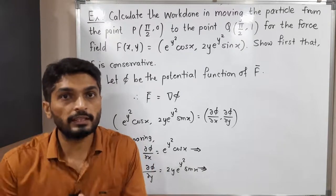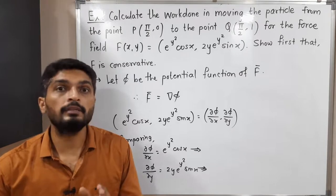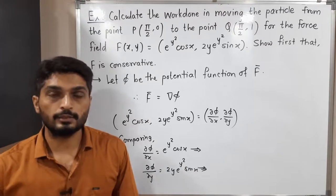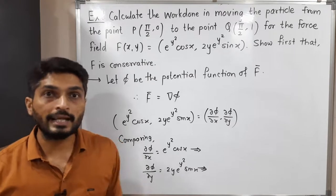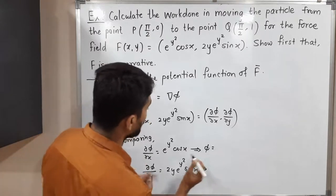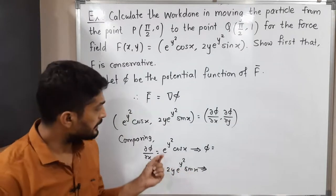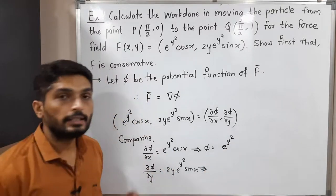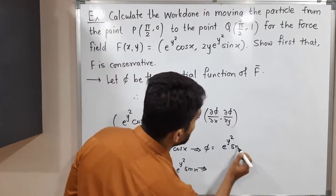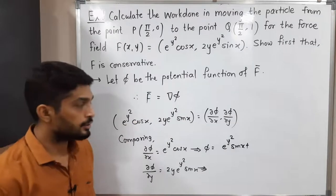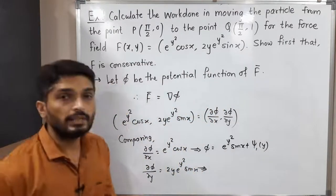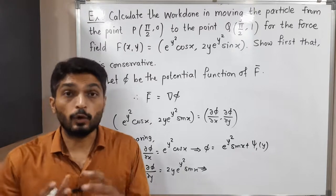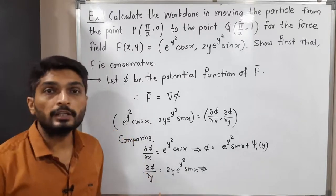Our final target is to find the value of φ. Since we have the derivative with respect to X, I will integrate with respect to X. The derivative and integration cancel each other, giving φ = e^(Y²)·sinX + C₁(Y), where C₁(Y) is a function of Y since when integrating with respect to X, all functions of Y are constant.